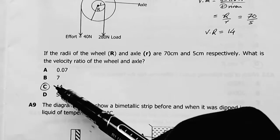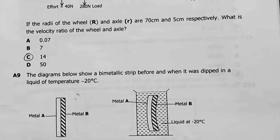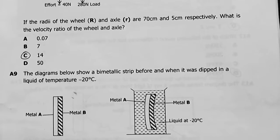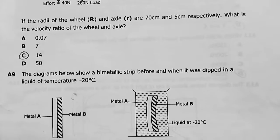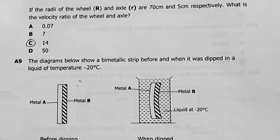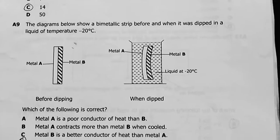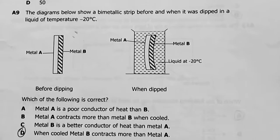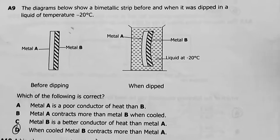Question 9: The diagram below shows a bimetallic strip before and when it was dipped in a liquid of temperature negative 20 degrees Celsius. There's our diagram before dipping and after being dipped.